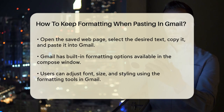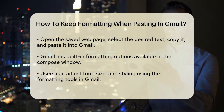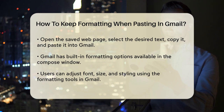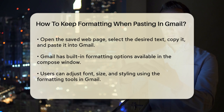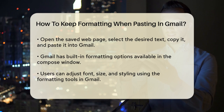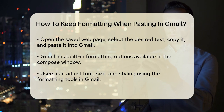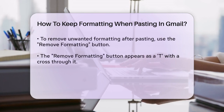Another approach is to use Gmail's built-in features. If you copy text from a formatted source, you can paste it into Gmail, and then use the formatting options available in the Compose window. Go to the bottom of the Compose window and use the formatting tools to adjust the font, size, and other styling options. This way, you can maintain or adjust the formatting as needed.